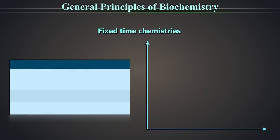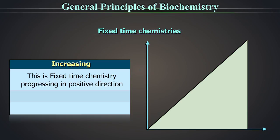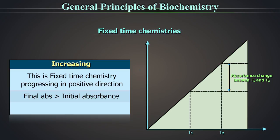Fixed time chemistries could be of two types. A. Increasing type. This is fixed time chemistry progressing in positive direction. The final absorbance is greater than initial absorbance. Therefore, the difference between the final and initial absorbance, called as delta absorbance, is always positive.